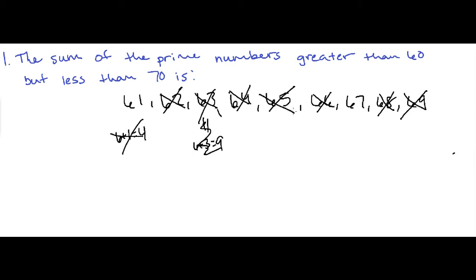My mind automatically catches 65 because we know that's divisible by 5 because it ends in a 5 or 0, so we're going to cross that off. Now we're left with these 2 options, 61 and 67.